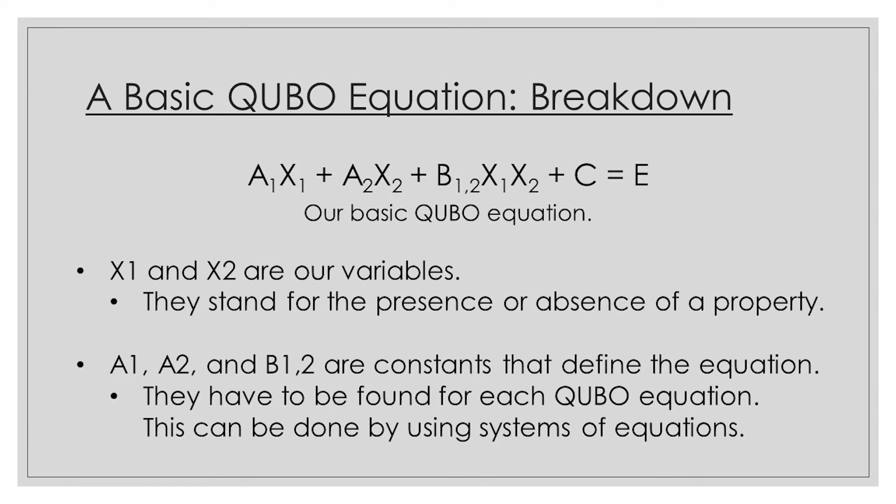a1, a2, and b1,2 are what actually define the condition QUBO equation. They're constants that are unique to the problem you're trying to solve, meaning you have to find them for each separate condition. And the way you're going to get these constants is by using systems of equations.